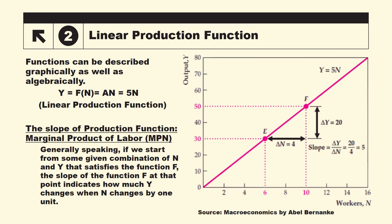So, aap deekh sakte hain ki haim workers move kar hain from 6 to 10, that is we are adding 4 more workers. And output is increasing from 30 to 50, that is output is increasing by 20. So 20 divided by 4 is equal to 5. Ye is ke slope ki value hai. Aur is ko economics minha margin product of labor kehenge. 5 is the margin product of labor.